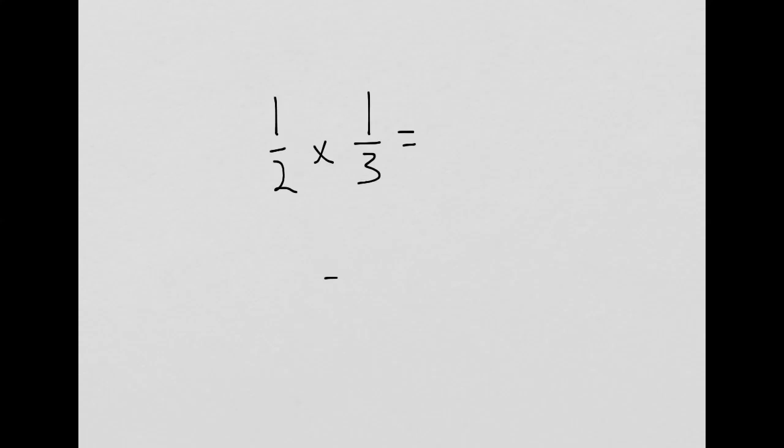I always think it's helpful to think about why things work. If we think about a representation of 1/2, the shaded area in green, if I divided this into thirds and then I take 1/3 of that 1/2, you'll notice that the part where they're both overlapping is 1/6 of the whole.